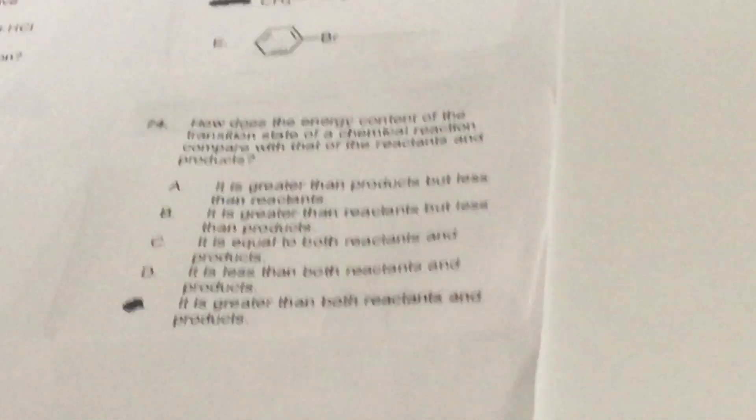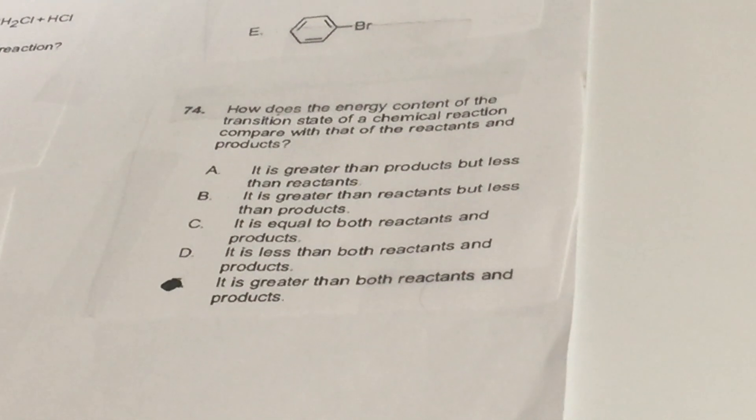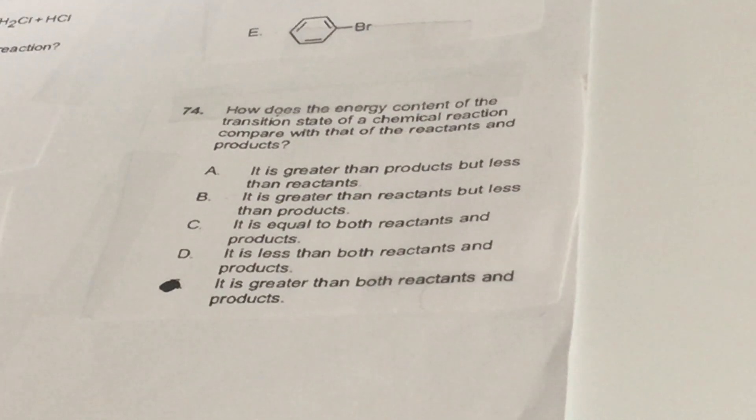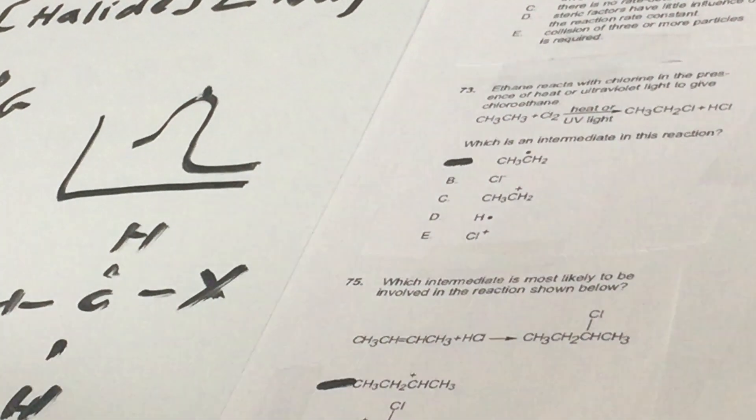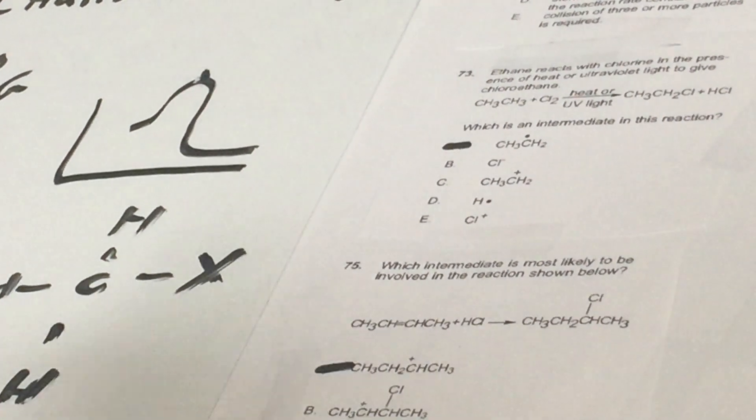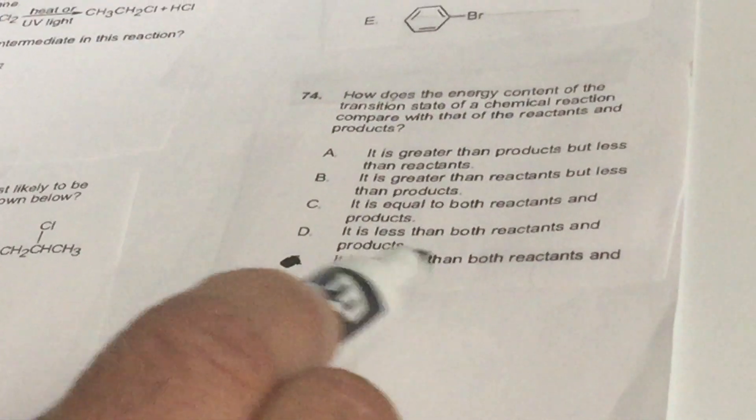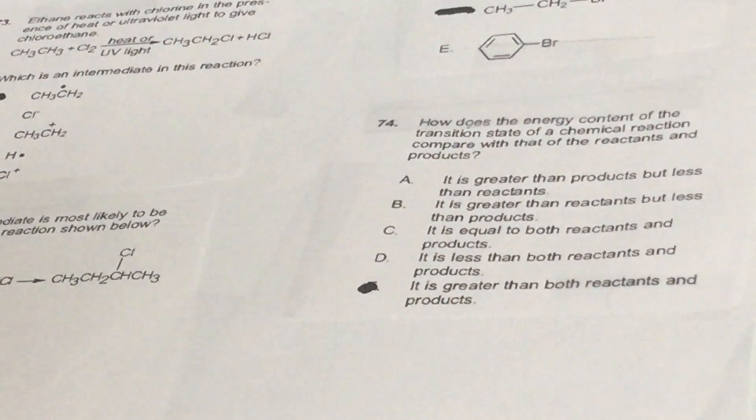Let's go to 74. How does the energy content of the transition state of a chemical reaction compare with that of the reactants in the products? Well, all you got to do is go back to this little picture that I drew, and you can see the transition state is the highest energy point. You can't isolate the transition state. This is where chemical bonds are made and broken simultaneously. So notice it is greater than both reactant and product. What a joke that was.